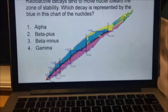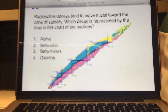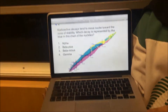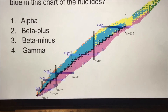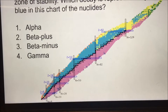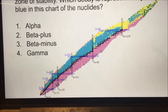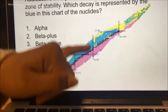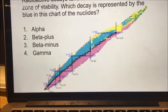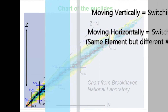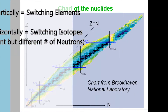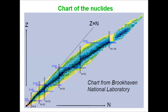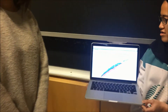What are these horizontal bars and vertical bars here? The horizontal bars are where your number of protons stays consistent. The vertical lines are your neutrons — the number of neutrons is consistent as you move down. Based on each decay, what kind of movement would you cause along this chart?